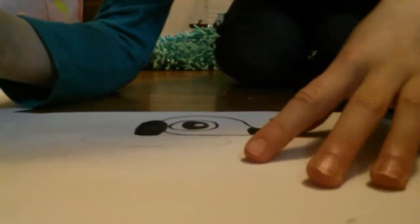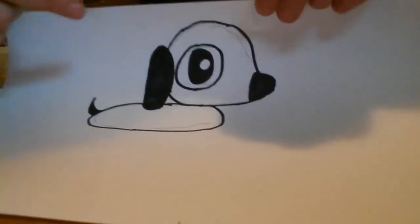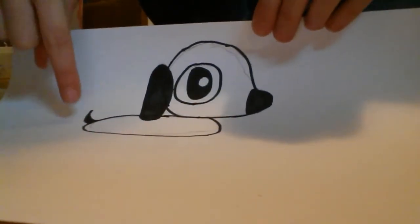It will look like this. Now trace it. Now draw on the cute little tail. It's just a little curve.